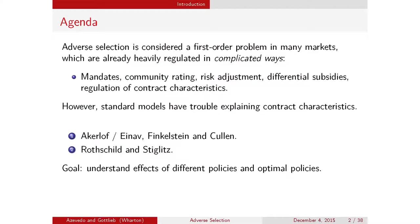The other workhorse model is the Rothschild and Stiglitz model, where in principle you do endogenously determine what kinds of products get traded. But you have to assume that people are ordered—that they only vary along one dimension. And even if we do assume that people are heterogeneous along a single dimension, these kinds of models don't always have equilibrium. For a lot of pretty reasonable examples, the model just tells us it doesn't have an equilibrium in that case.